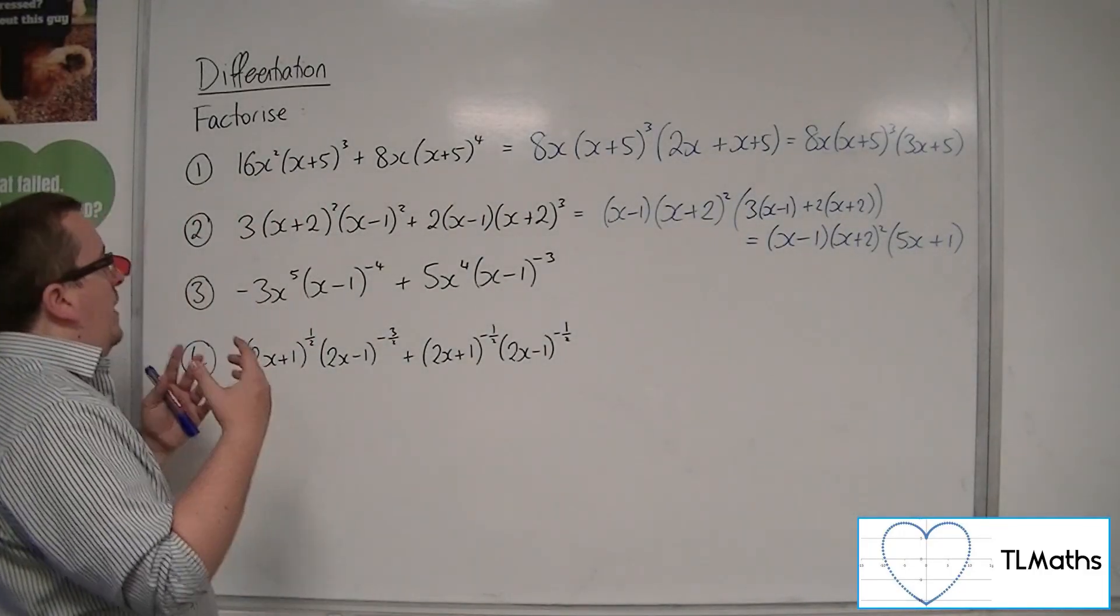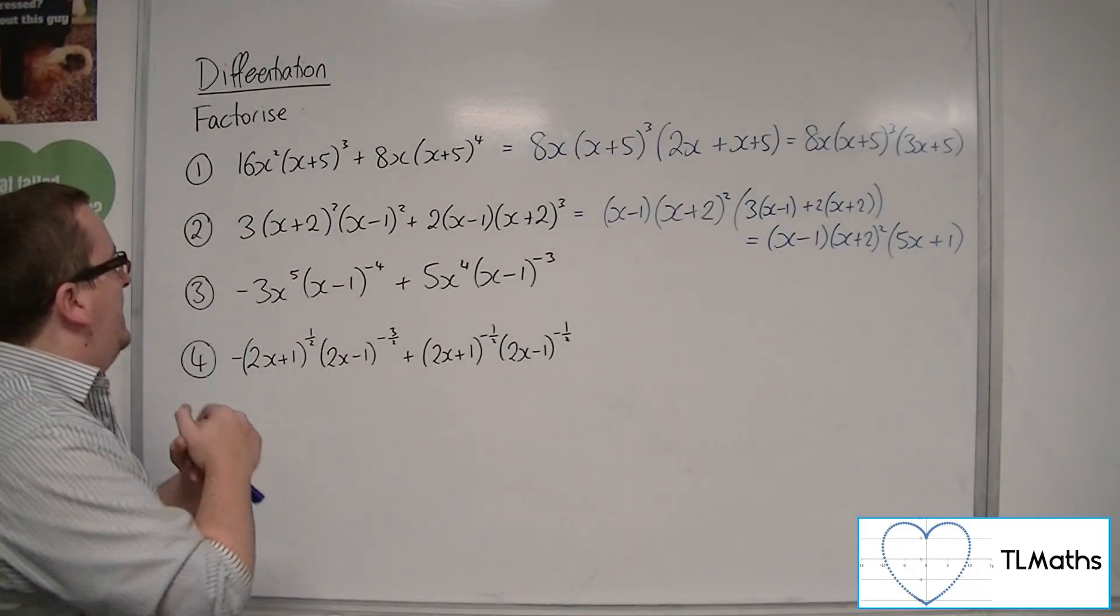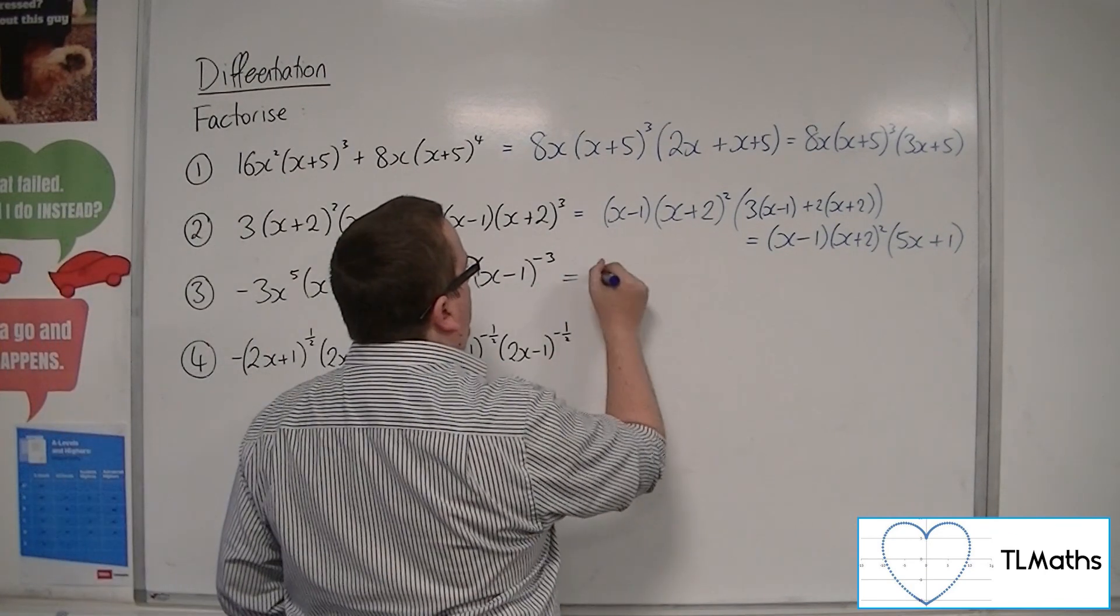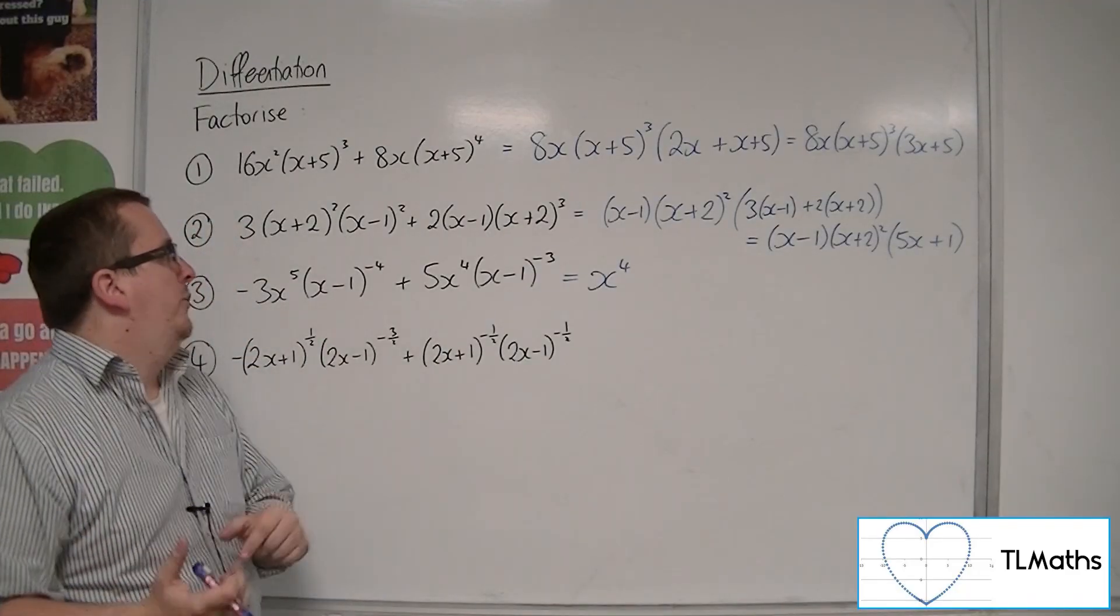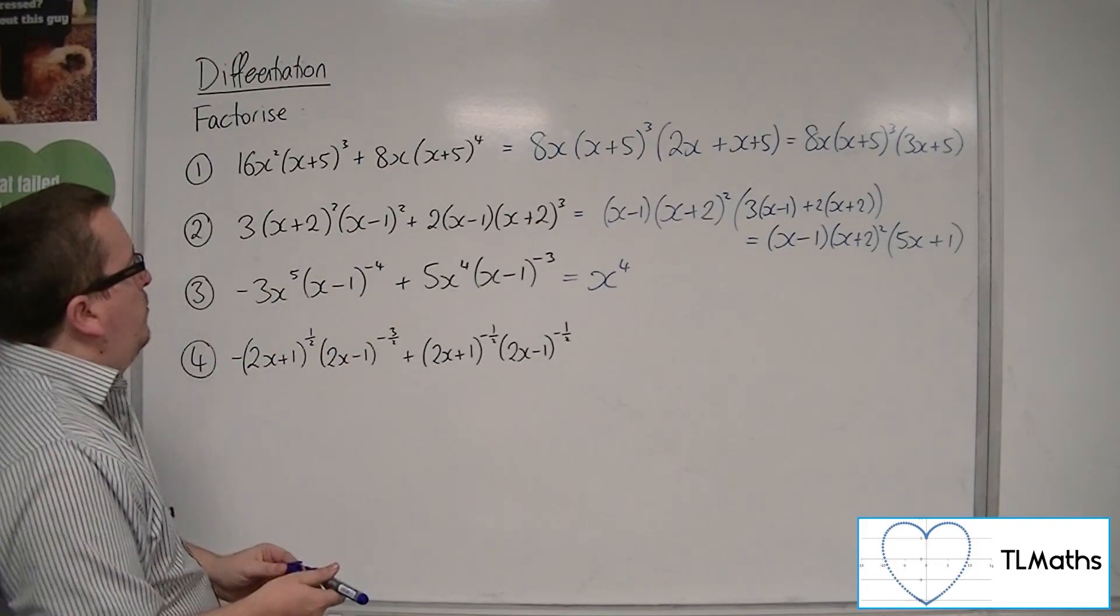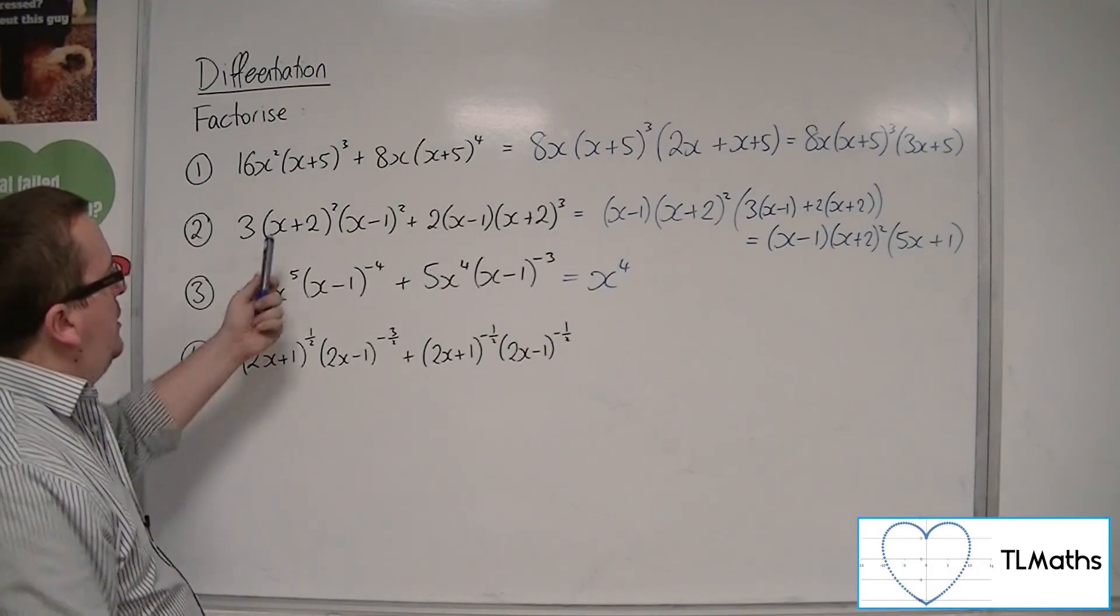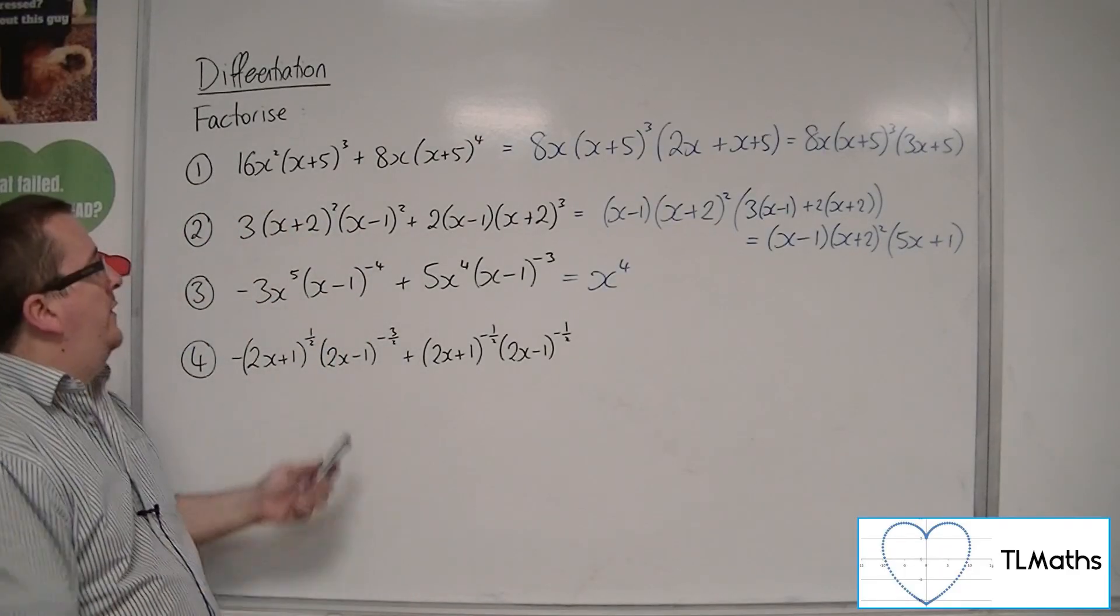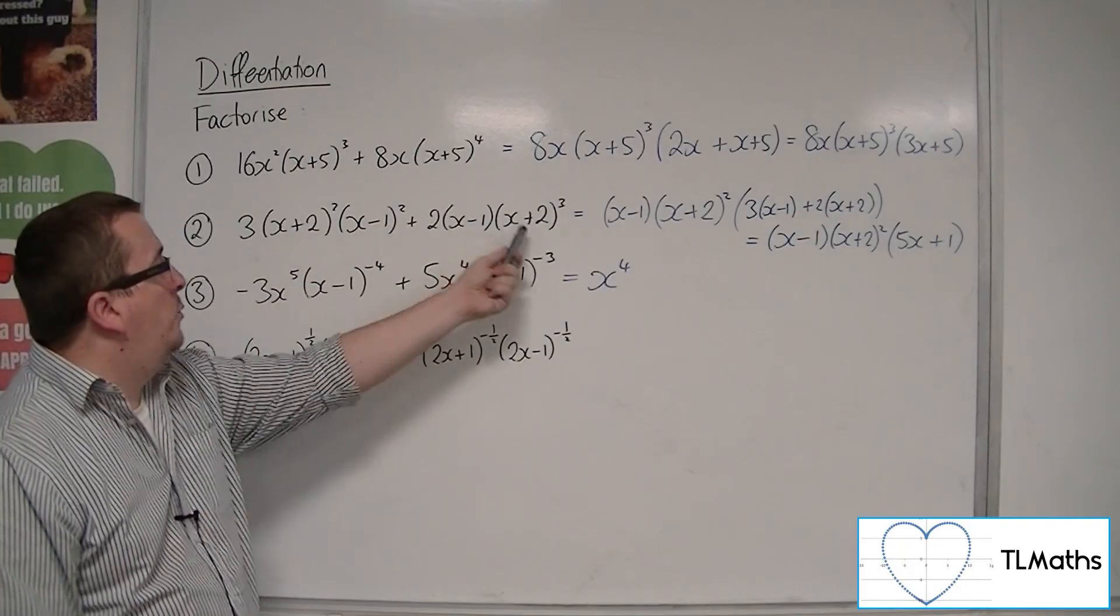So first of all, I don't have anything in common with the -3 and the 5, so I don't need those. I can pull out x⁴ from both of these terms though, so that can come out. Now as for (x-1)^(-4) and (x-1)^(-3), probably our intuition, because we're used to always pulling out the lower of the two indices, so here we pulled out (x-1), here we pulled out (x+2)².